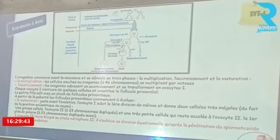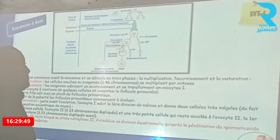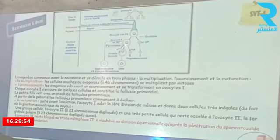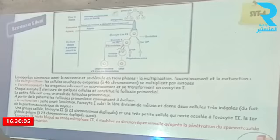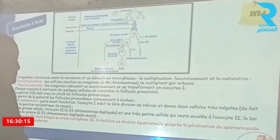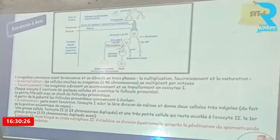Chez le fœtus et à la naissance jusqu'à la puberté, c'est une période de repos. De façon cyclique, de la puberté jusqu'à la ménopause, l'ovocyte 1 se transforme en ovocyte 2 bloqué en métaphase 2 avec le premier globule polaire. En cas de fécondation, l'ovocyte 2 se transforme en ovotide fécondé avec libération du deuxième globule polaire. En absence de fécondation, l'ovocyte 2 subit une dégénérescence. L'ovocyte 2 reste bloqué en métaphase 2 et n'achève sa division équationnelle qu'après la pénétration du spermatozoïde lors de la fécondation.